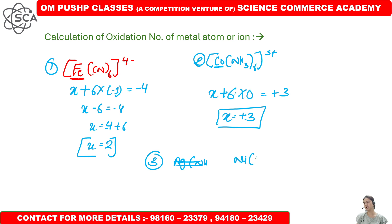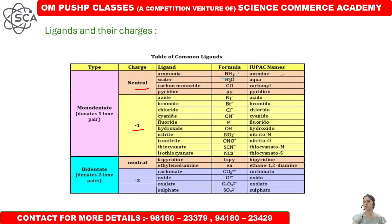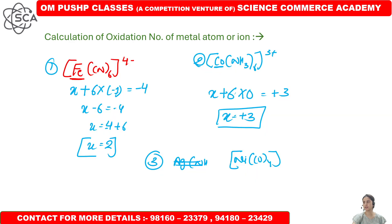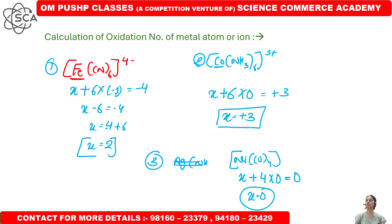For example, we have Ni(CO)4. CO is carbonyl, which is a neutral ligand, so its charge is zero. So: x + 4×0 = 0, giving x = 0. There is no charge over nickel. The oxidation number of nickel is zero.